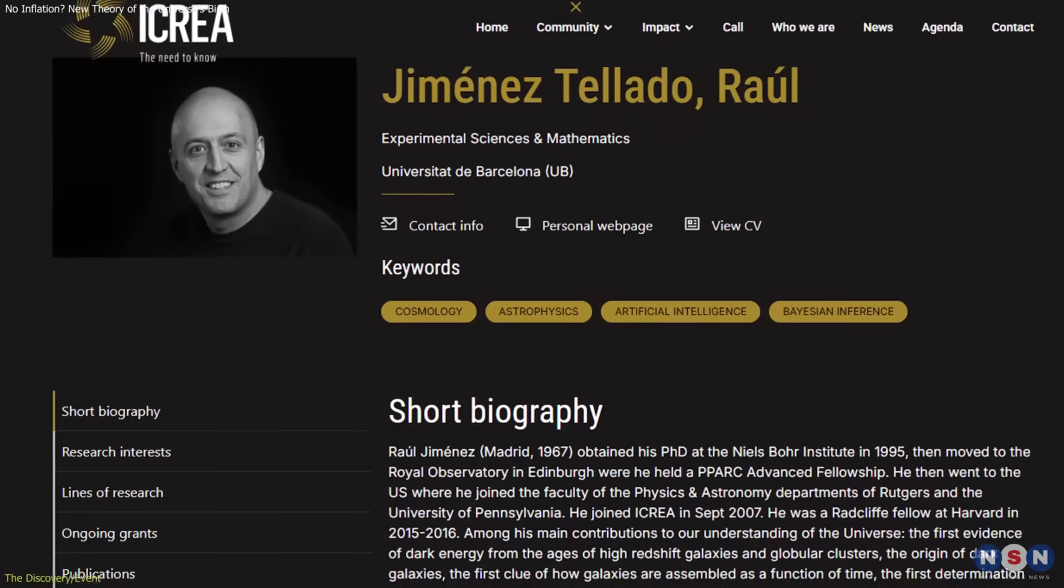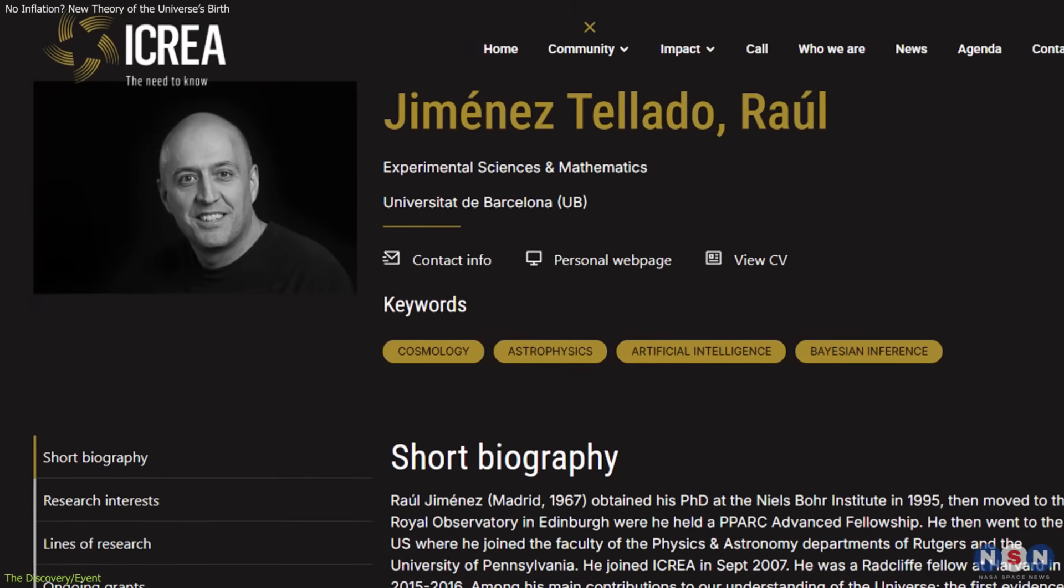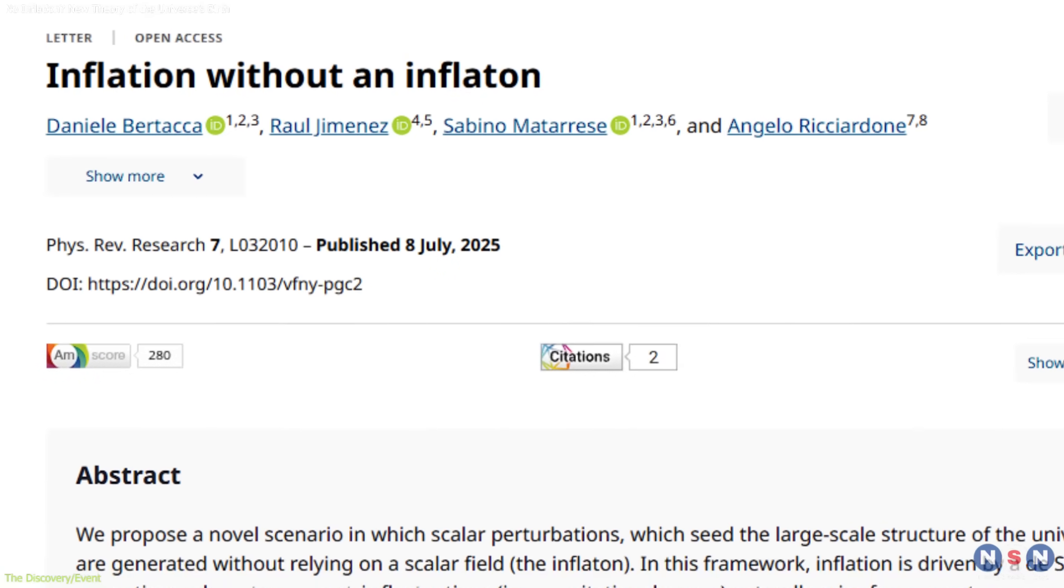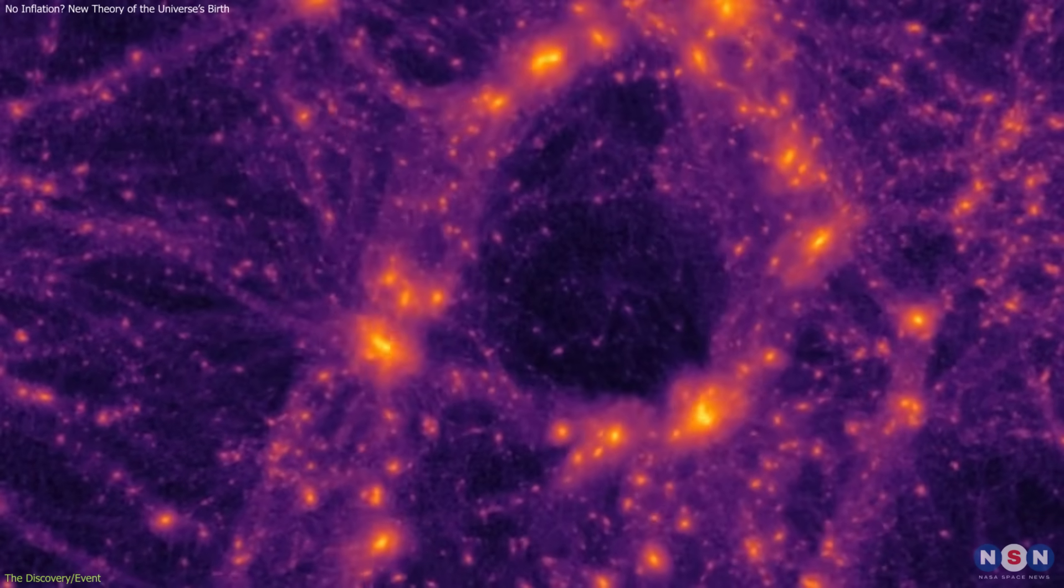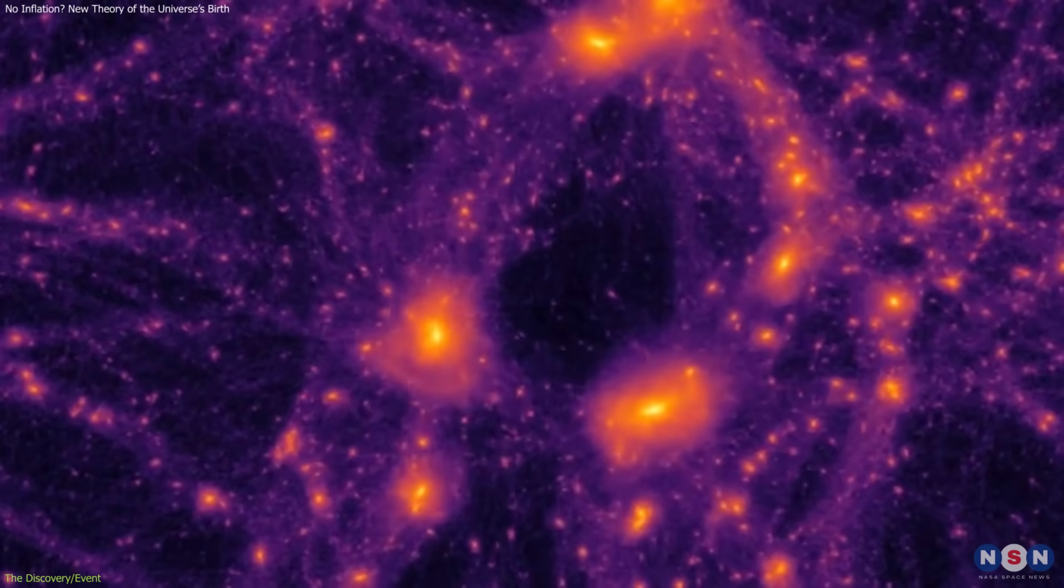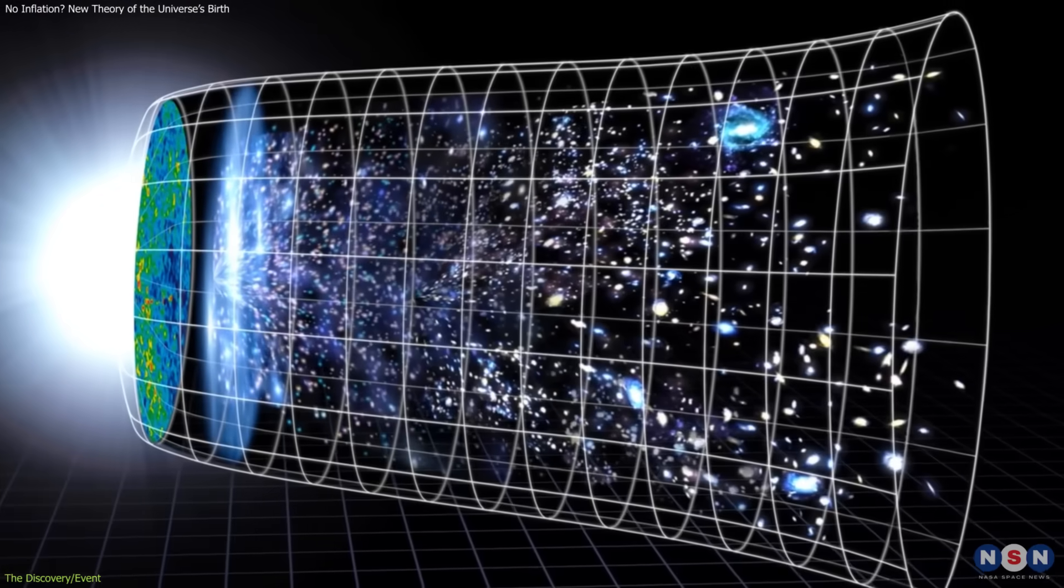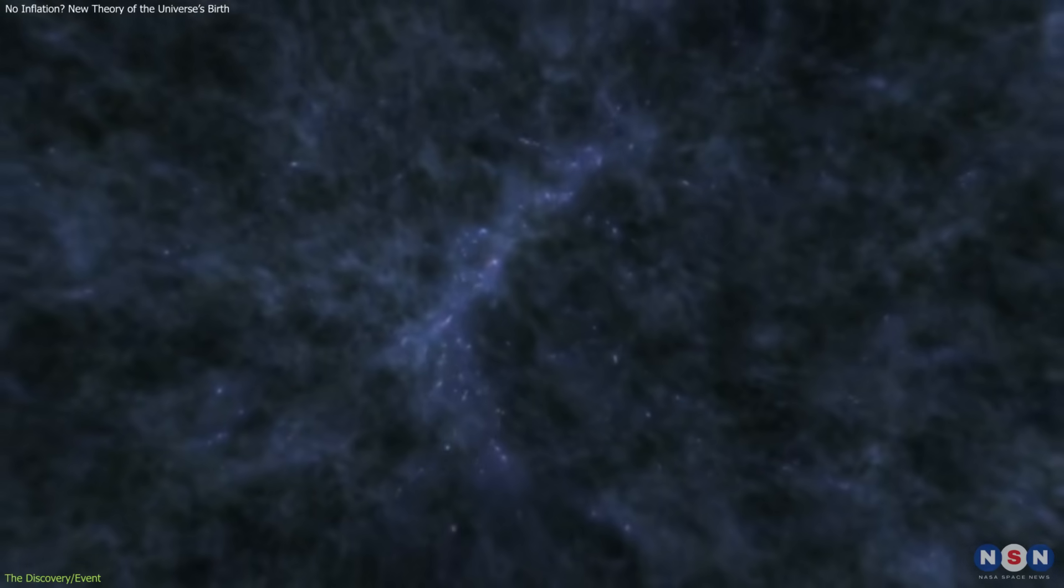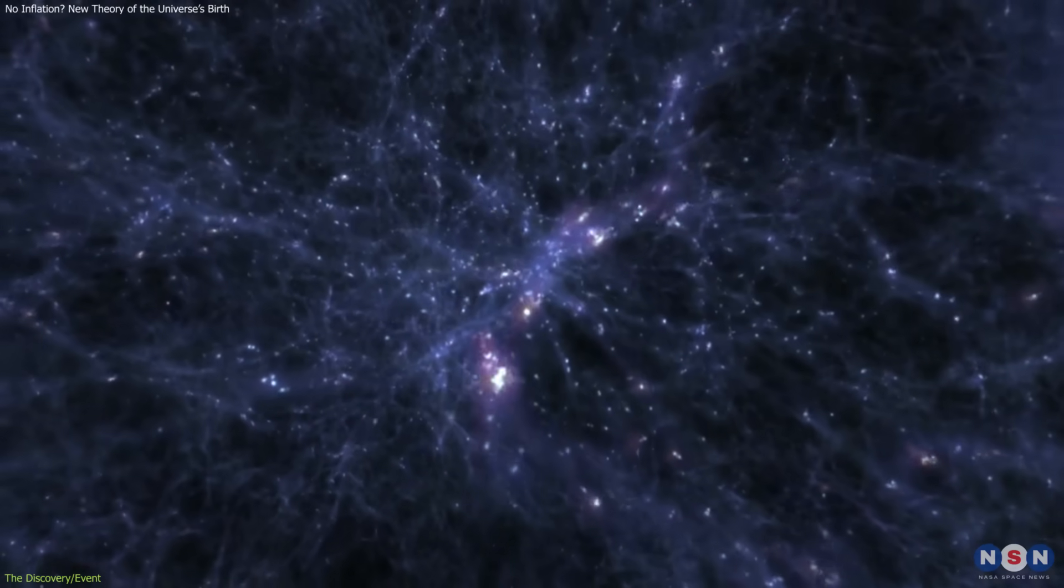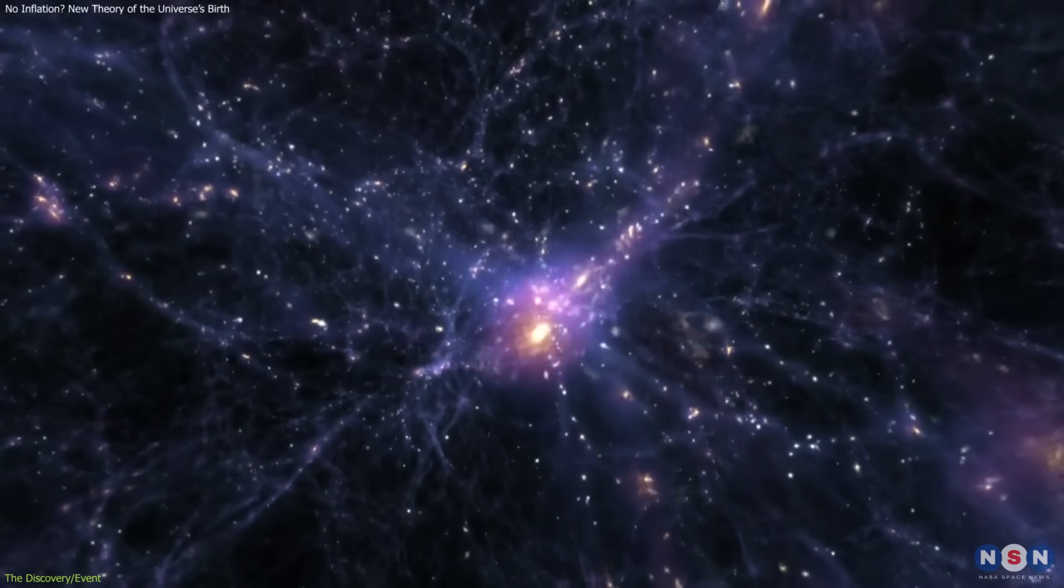The research was led by Raul Jimenez at ICREA in Spain, working with colleagues in Italy. Their goal was to revisit the assumption that inflation is required to account for the universe's large-scale features. Inflation has been powerful as a framework. It explains why the cosmos appears uniform, why it is geometrically flat, and how tiny irregularities later grew into galaxies.